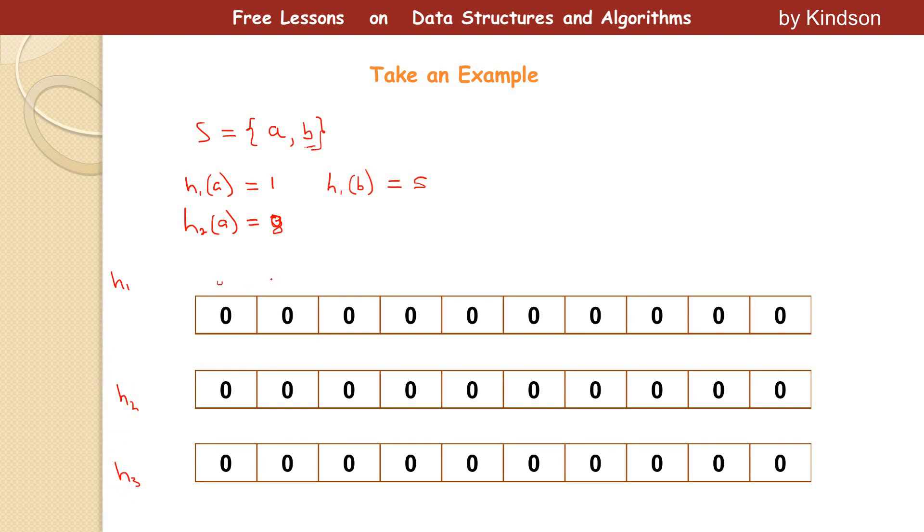Position zero, one, zero, one. So we've calculated H1 of A, H2 of A. The next thing is H3 of A. So you actually pass the element through all the three hash functions, right? Yeah. So H1 of A gives us one. So we go to position one. This is zero, one. And set it to one. H2 of A gives us eight. So we go to position eight and set it to one. Now, this is H2. Take notes. So go to position eight and H2 and set it to one.